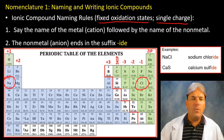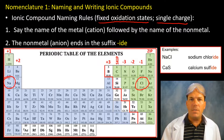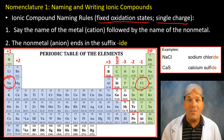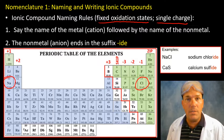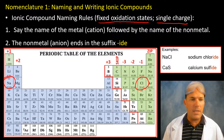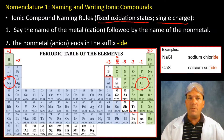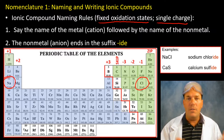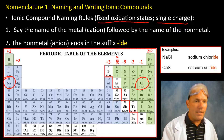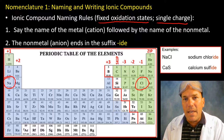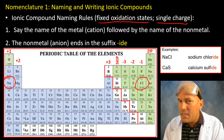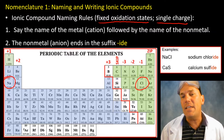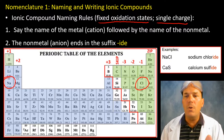Let's do a practice problem: sodium chloride. Did you look at the periodic table? Of course. Are both species to the right of the stairs? No — one is on the left, one is on the right. That means we're naming ionic compounds. We say the metal, sodium, then the name of the anion, chlorine, but instead of "-ine" we put the suffix "-ide": sodium chloride.